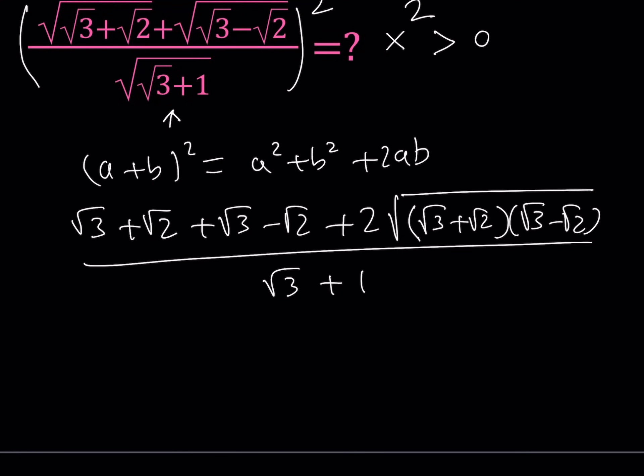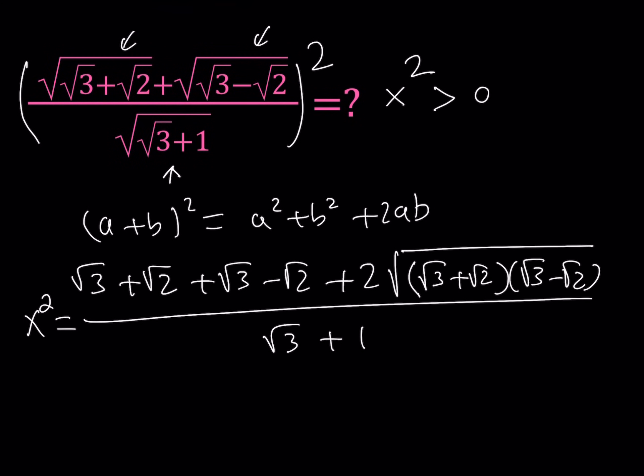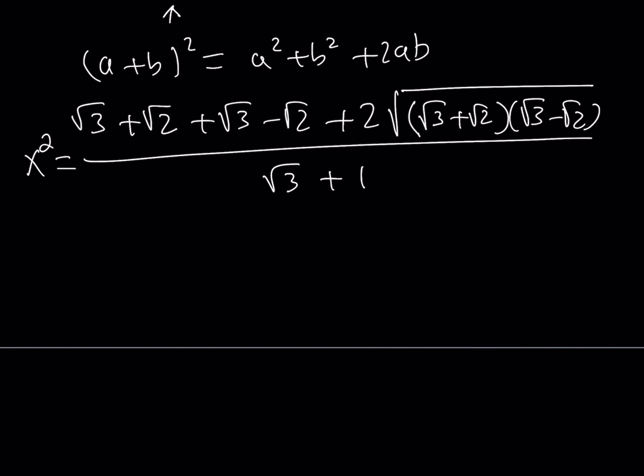Now, let's go ahead and simplify this expression even more. But remember, this is equal to x squared, and x is always greater than 0. I wrote, it kind of looks like x squared is greater than 0, but what I meant to write was x is greater than 0. Of course, x squared is also greater than 0 in that case. Now, square root of 2 cancels out, and we can write this as 2 root 3. Now, inside the radical here, what is going on?